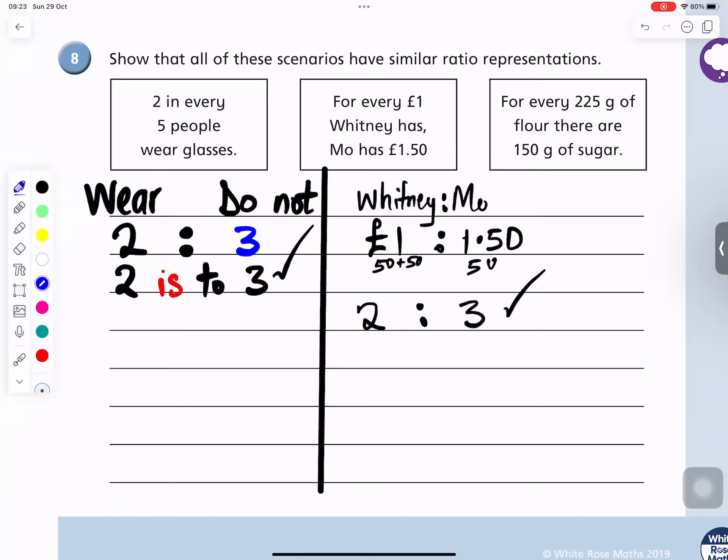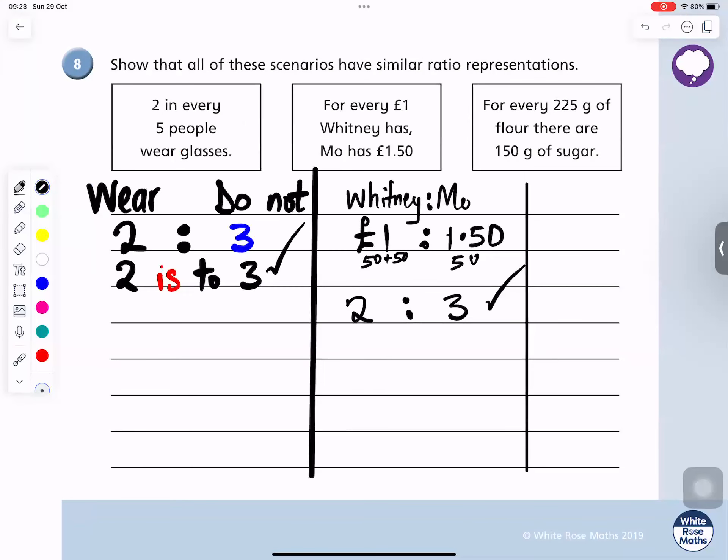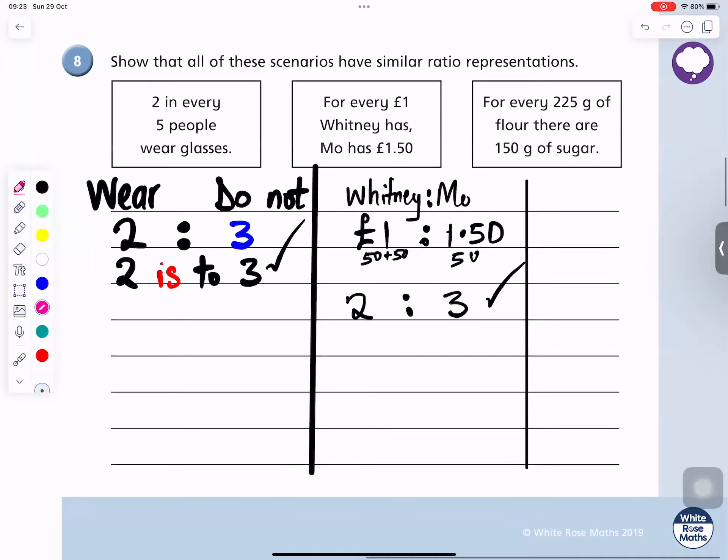And then for the third one, for every two hundred and twenty-five grams of flour. So put flour. Put the two dot, which stands for is to, and then put sugar. So flour is two twenty-five, sugar is one fifty. Now we need to simplify.